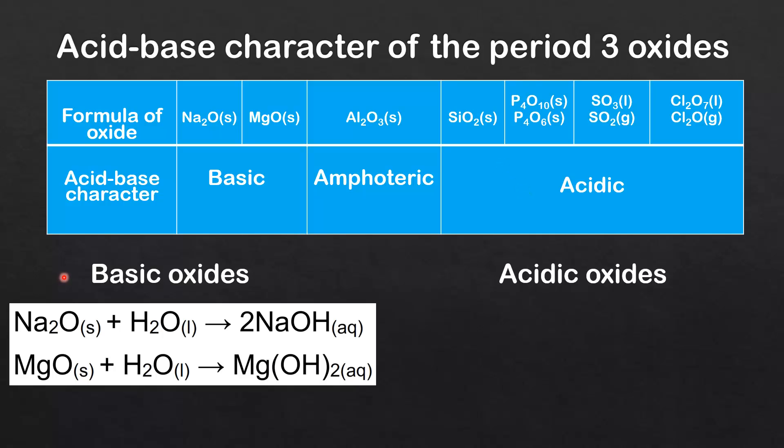Next we look at some equations you need to know for basic oxides and acidic oxides. Starting with the basic oxides, we have sodium oxide reacting with water to form sodium hydroxide, which is a strong base. And we have magnesium oxide reacting with water to form magnesium hydroxide.